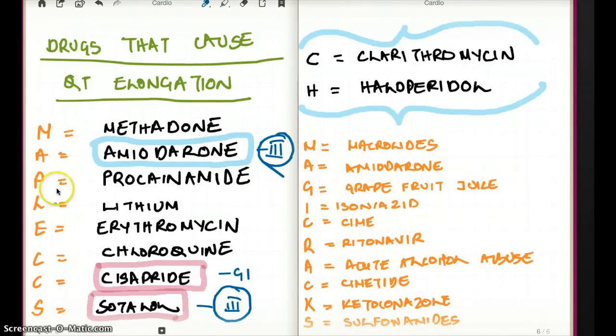So the way I remember drugs that cause QT interval prolongation is MAPLE SYRUP. M for methadone. Methadone is an opioid and we usually use it for treating heroin addicts. Amiodarone is a class III antiarrhythmic. Procainamide is class IA antiarrhythmic. Lithium is used for bipolar. Erythromycin is a macrolide. Chloroquine is a drug for malaria, so all these drugs are going to cause prolongation of the QT interval.